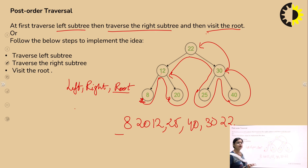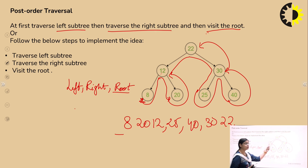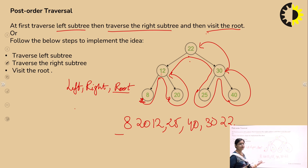To summarize postorder traversal: we follow the rule that the root traverses first through the left, then the right, and finally the root is visited. So 8 is the left child, 20 is the right, 12 is the root of that subtree, then 25, 40, 30, and 22 as the final root. So there are three types of traversal: preorder, inorder, and postorder.